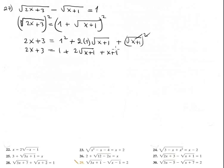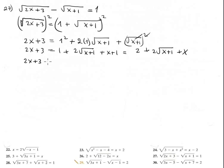Combine like terms: 1 plus 1 equals 2, giving 2 plus 2 times the square root of x plus 1, plus x. Now isolate the second radical: 2x plus 3 minus 2 minus x equals 2 times the square root of x plus 1.